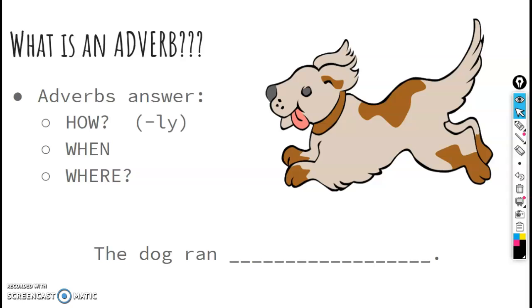And I'm going to put the word fast on our anchor chart as an example. But remember, you can use this sentence to figure out if the word you're thinking is an adverb. The dog ran blank. All right, good luck. Go add a word to our anchor chart. Have a great day. Bye guys.